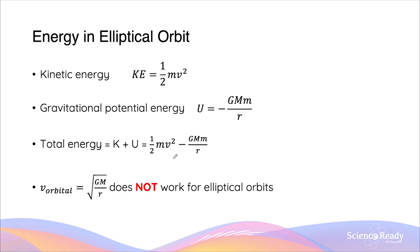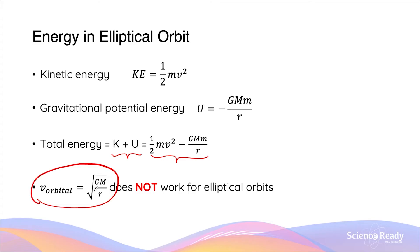Things get more interesting when we look at energy changes within an elliptical orbit. In an elliptical orbit, we also examine kinetic energy and gravitational potential energy, given by the same equations as before. The total energy is again equal to their sum: half mv squared minus GMm over r. The caveat for elliptical orbits is that the generic orbital velocity equation, square root of GM over r, does not work — it only applies for circular orbits, which is why we do not substitute it into the kinetic energy equation.